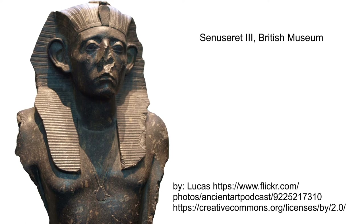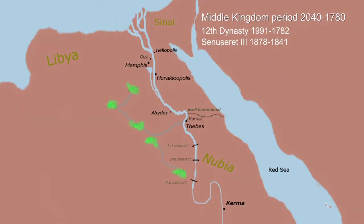Since Senusret I, the Nubian kingdom of Kerma had been expanding. So Senusret III refortified the fortress at Aswan at the first cataract and built further fortresses up towards the second cataract. He began to build the fortresses up on top of rocky cliffs built right into the rocks — different from the fortresses previously built. He also built roads to the new fortresses to increase his control over the area.